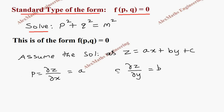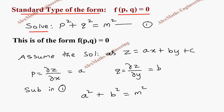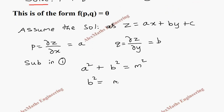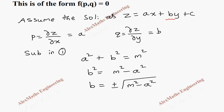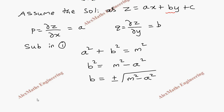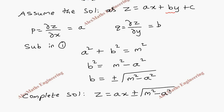Taking the question as the first expression, we substitute p as a and q as b. Substituting into equation one, p² becomes a², q² becomes b², and the other side is m². We solve for b: b² = m² - a², so b = ±√(m² - a²). Substituting this b back into the assumed solution, we get the complete solution: z = ax ± √(m² - a²)·y + c.